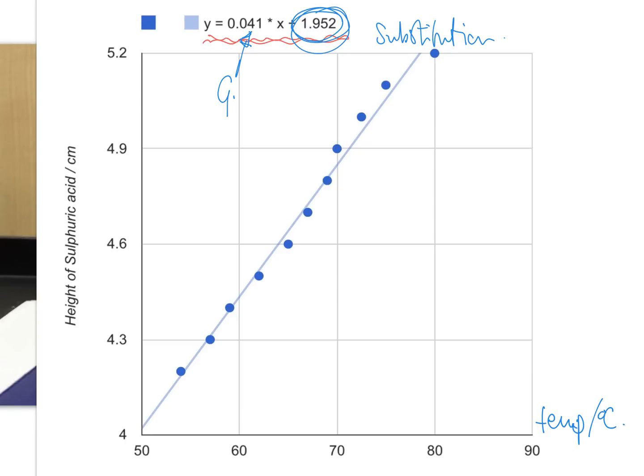However, what we do know is that the absolute zero is going to be equal to minus intercept divided by gradient, which is minus 1.952 divided by 0.041. And if I just try that out, if I add 2 divided by 0.041, I get minus 48 degrees Celsius, which of course is nothing close. So what are the problems there?